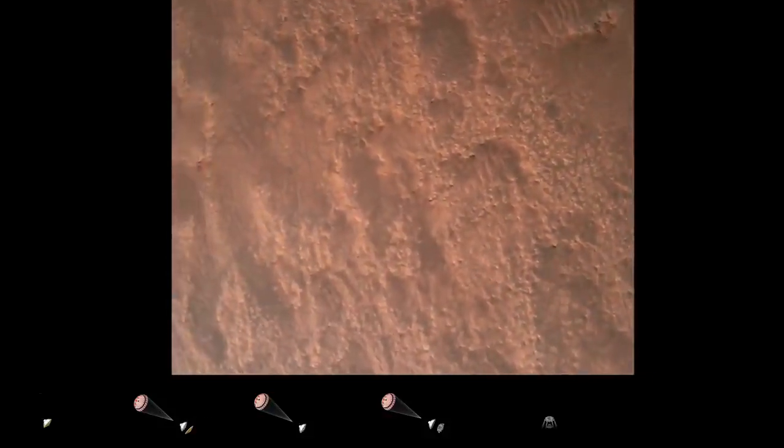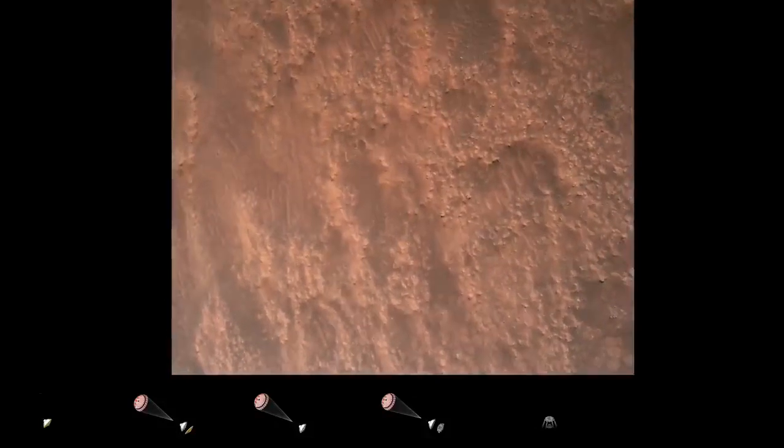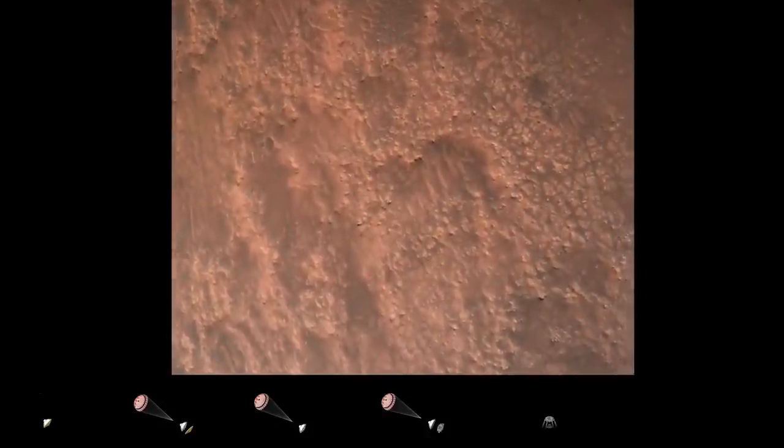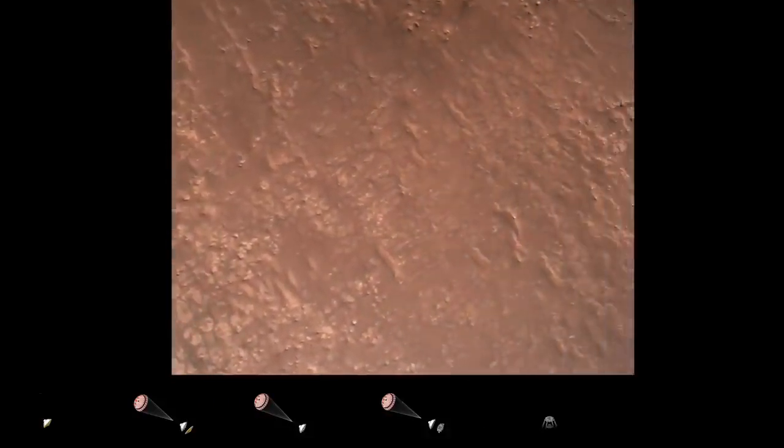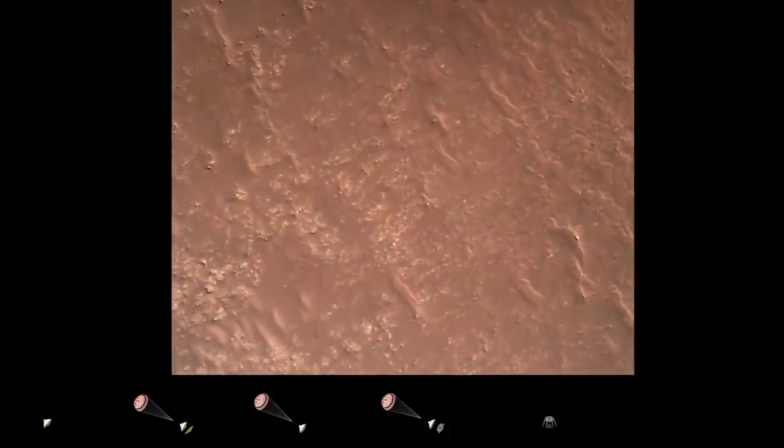Terrain safety bravo. We have completed our terrain relative navigation. Current speed is about 30 meters per second, altitude of about 300 meters off the surface of Mars.